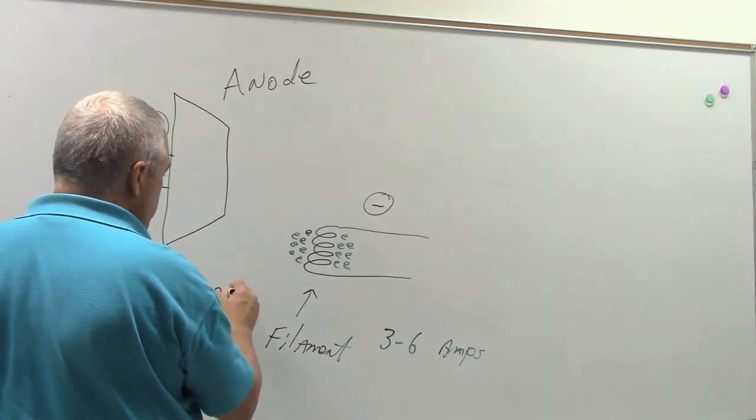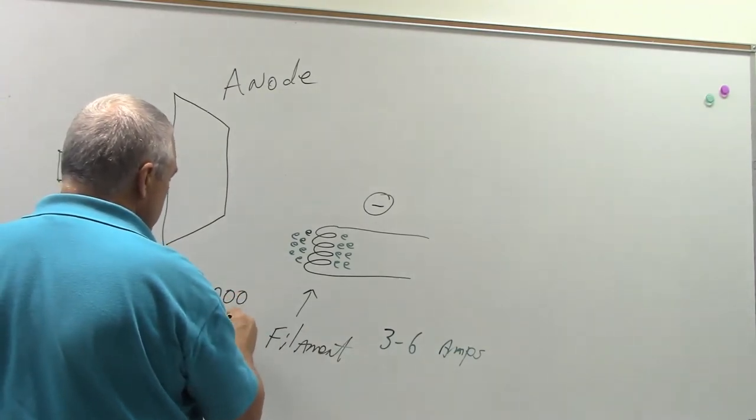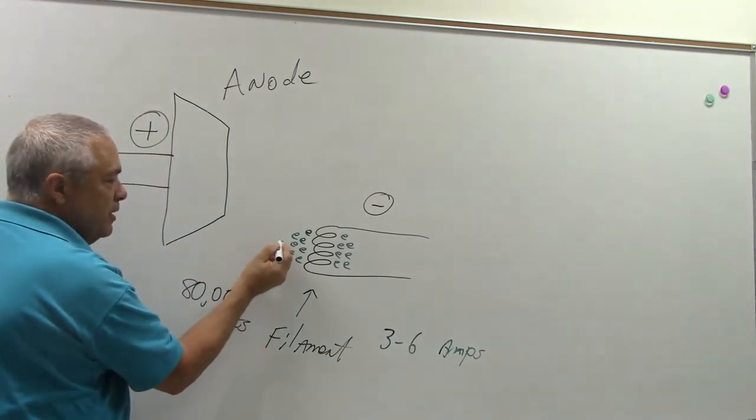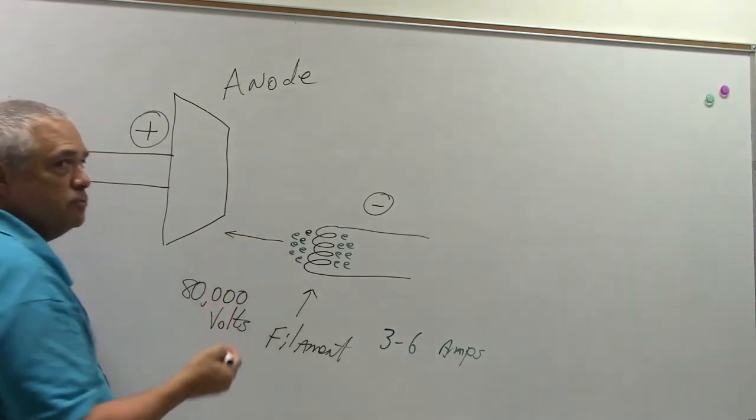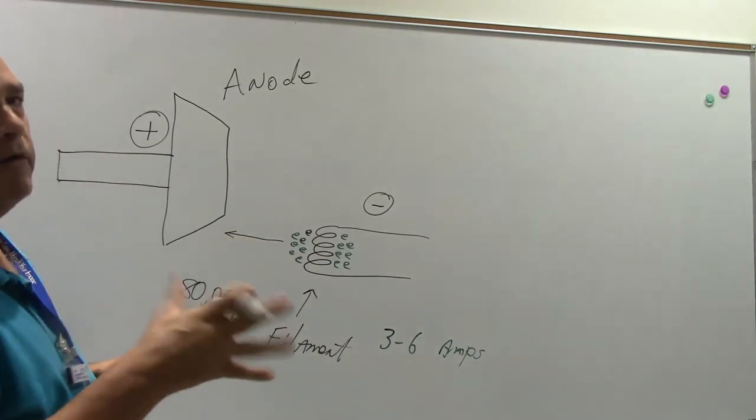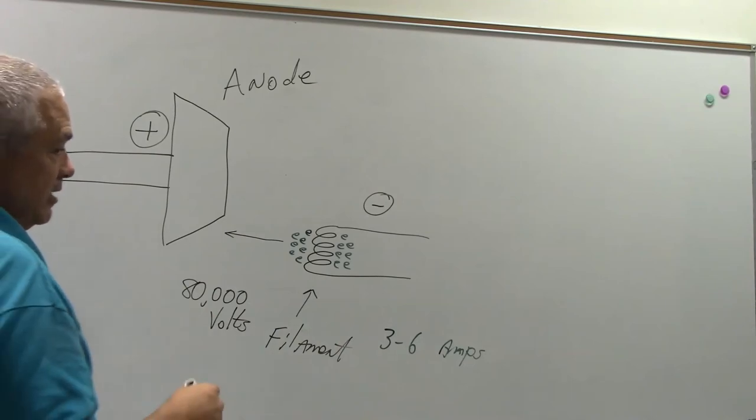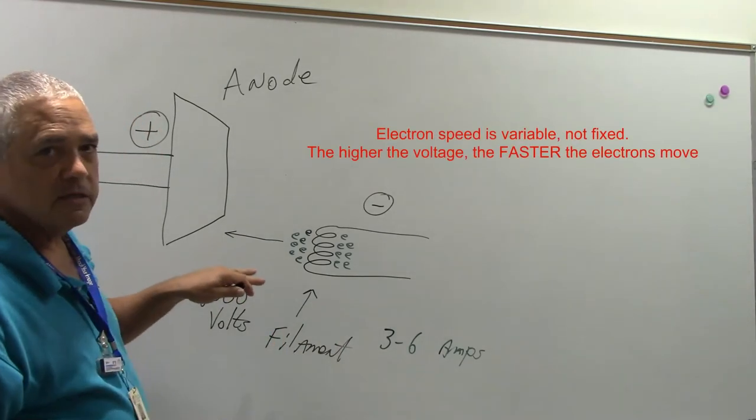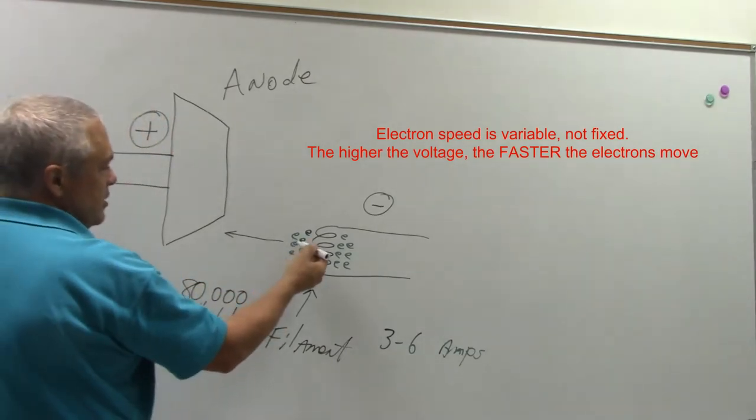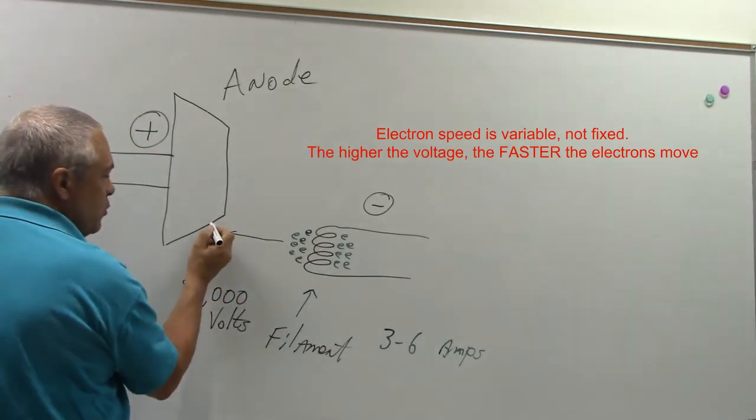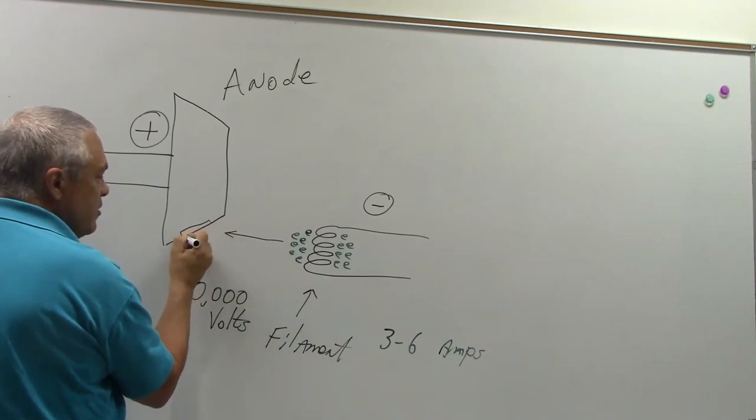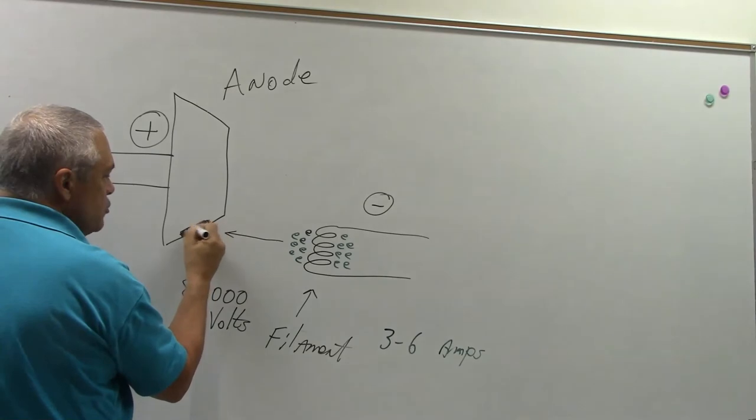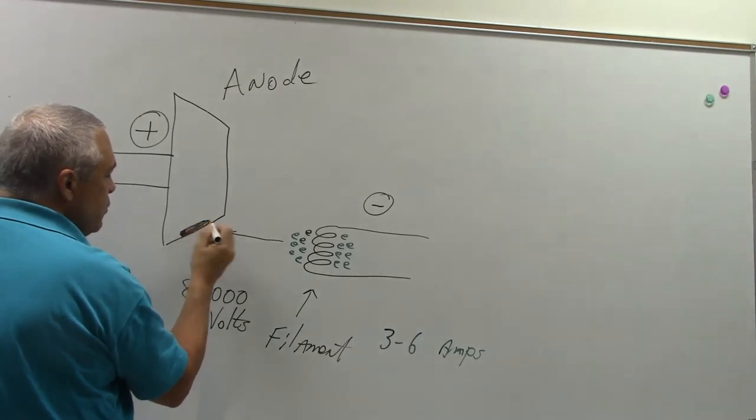80,000 volts. And that's going to cause these guys to fly pretty fast. They're not going to go the speed of light, but they're going to go about 50% of the speed of light, which is booking when you're talking about only jumping a distance of one or two centimeters. So, these electrons are going to travel very, very quickly, and they're going to encounter the anode at this area here, which we refer to as the focal track.